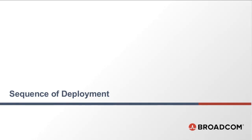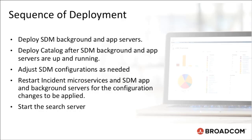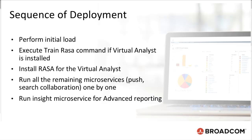In this section, we will cover the sequence of deployment of the entire solution. This includes deploying SDM Background and App Servers first, then deploying Catalog after SDM Background and App Servers are up and running, and adjusting SDM configurations as needed. Restart Incident Microservices and SDM App and Background Servers for configuration changes to be applied. Start the search server, perform initial load, execute the train RASA command if Virtual Analyst is installed, then install RASA for the Virtual Analyst. Run all the remaining microservices such as Push, Search, and Collaboration one by one.